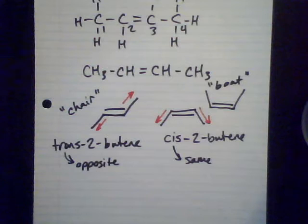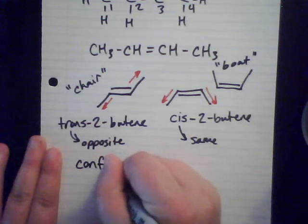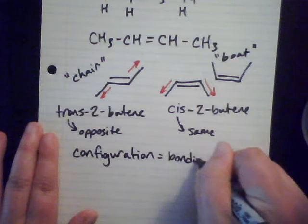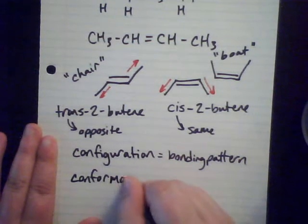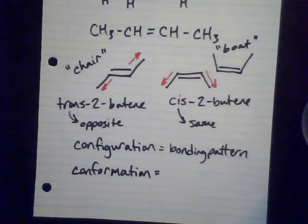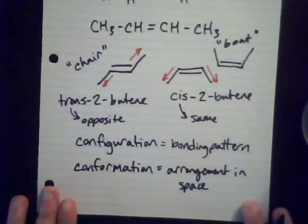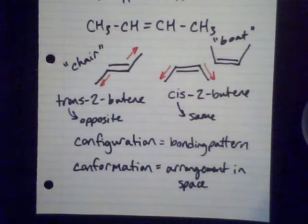Around any double bond, if you have groups coming off of it, you can have the possibility of either a cis or a trans isomer. These isomers will have slightly different properties depending on what's coming off each side, and that allows for completely different molecules with different properties. For vocabulary: structural isomers have the same chemical formula but a different configuration — configuration being the bonding pattern. Cis-trans isomers have the same chemical formula but a different conformation, which is the way the molecule is three-dimensionally arranged in space.